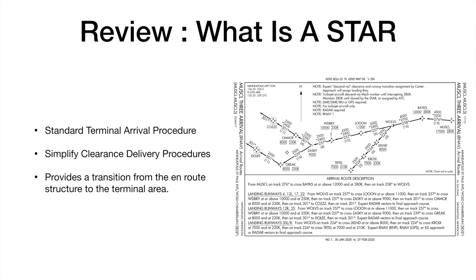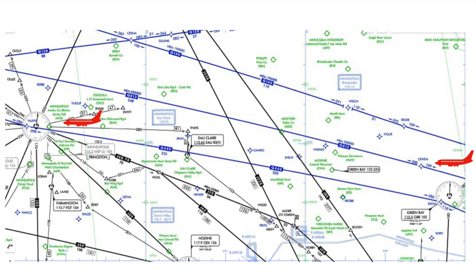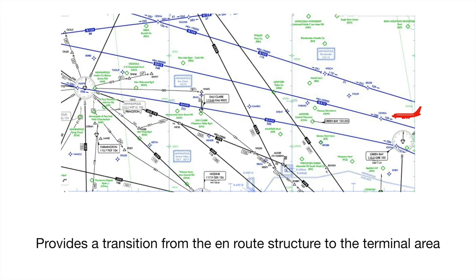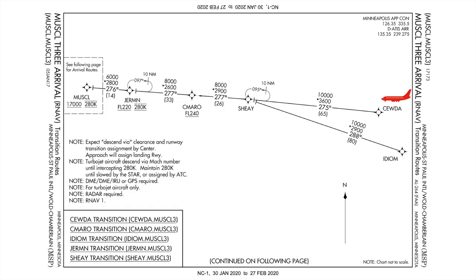It also provides a transition from the en-route structure to the terminal area. So while we're flying inbound, we were on the Q812. The CUDA transition is what we got for the arrival. If you look to the right, that's where we are on the Q812 — it's on the high route chart, and this whole arrival provides that transition. Let's take a closer look here into the transition into Minneapolis, zooming in to see that CUDA, that RNAV point on the Q812.